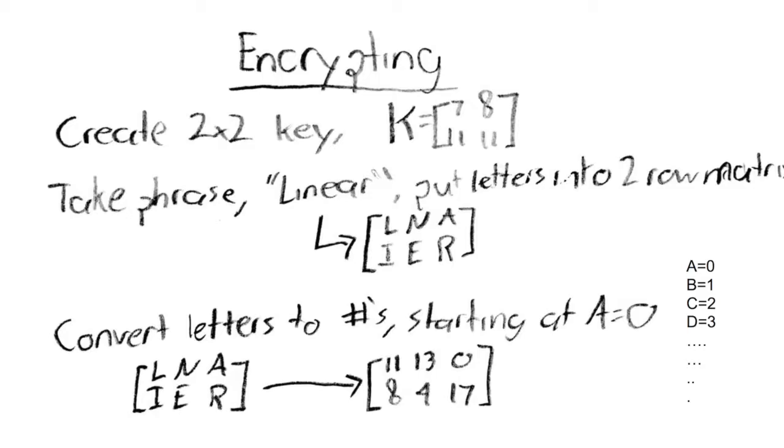The Hill Cipher starts by the creation of a 2x2 matrix. This 2x2 matrix is the key that will encode the information or message. In this case, the word linear was encoded.